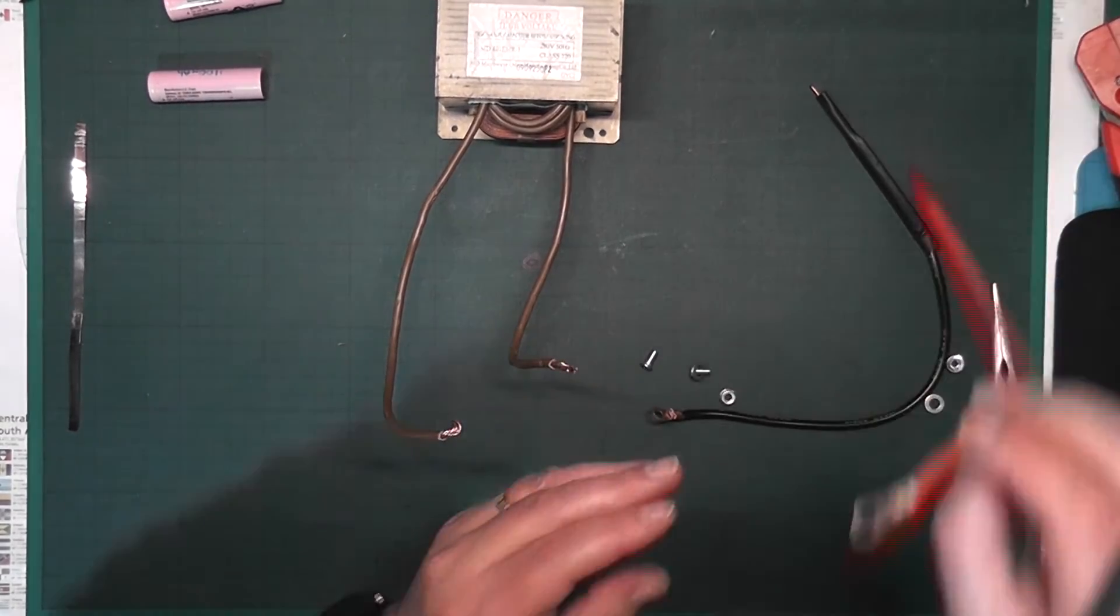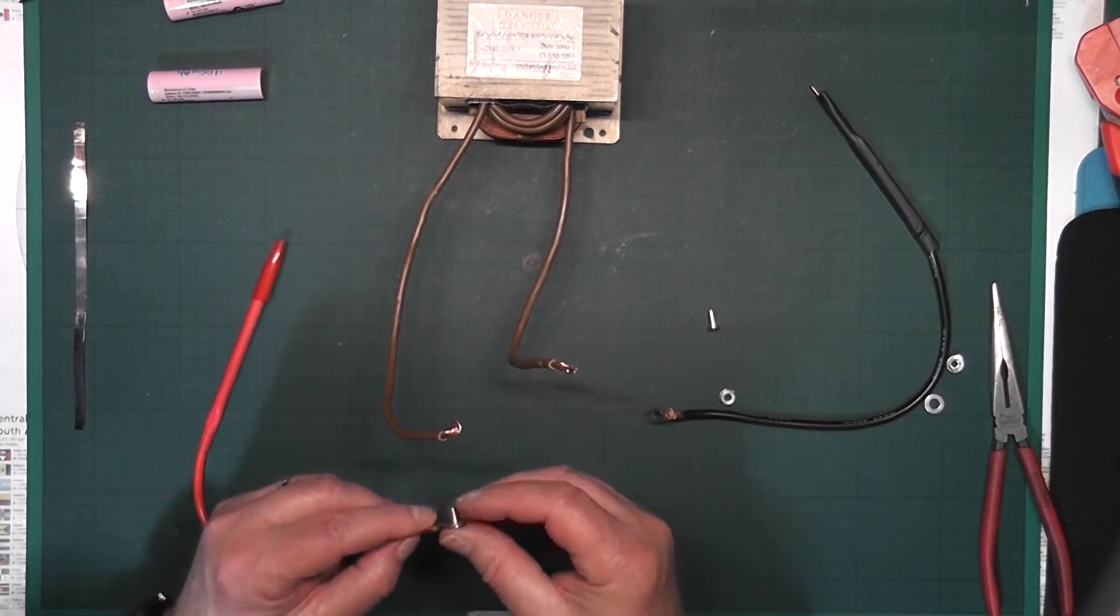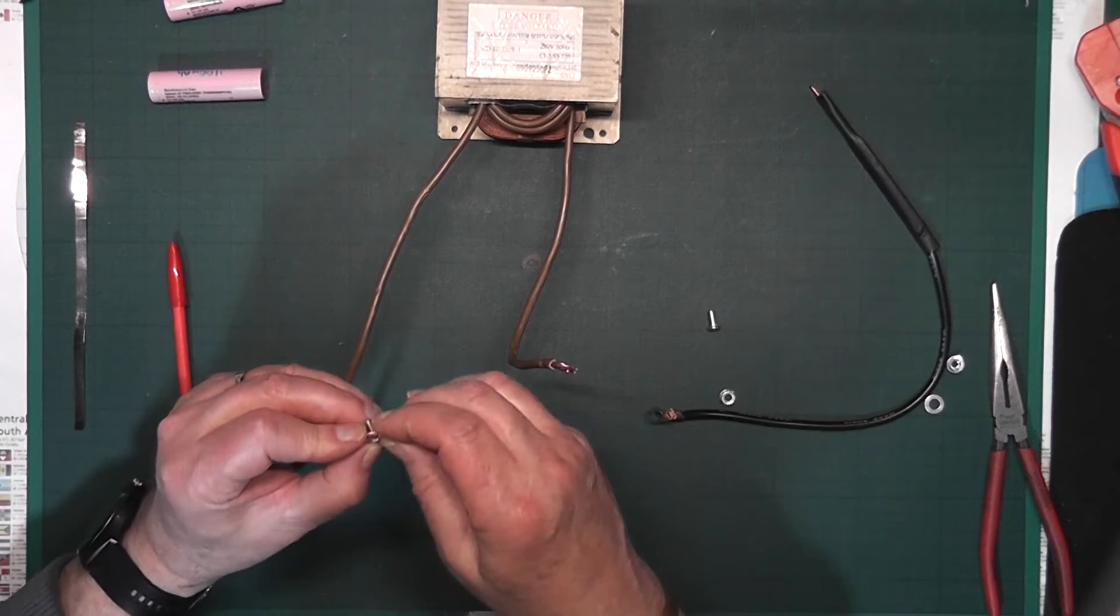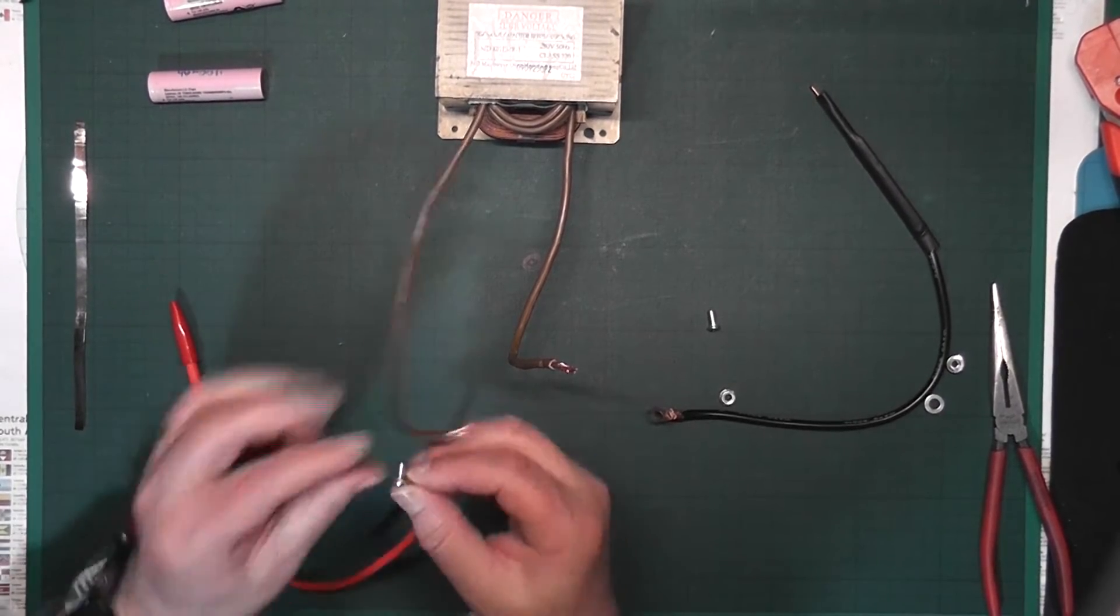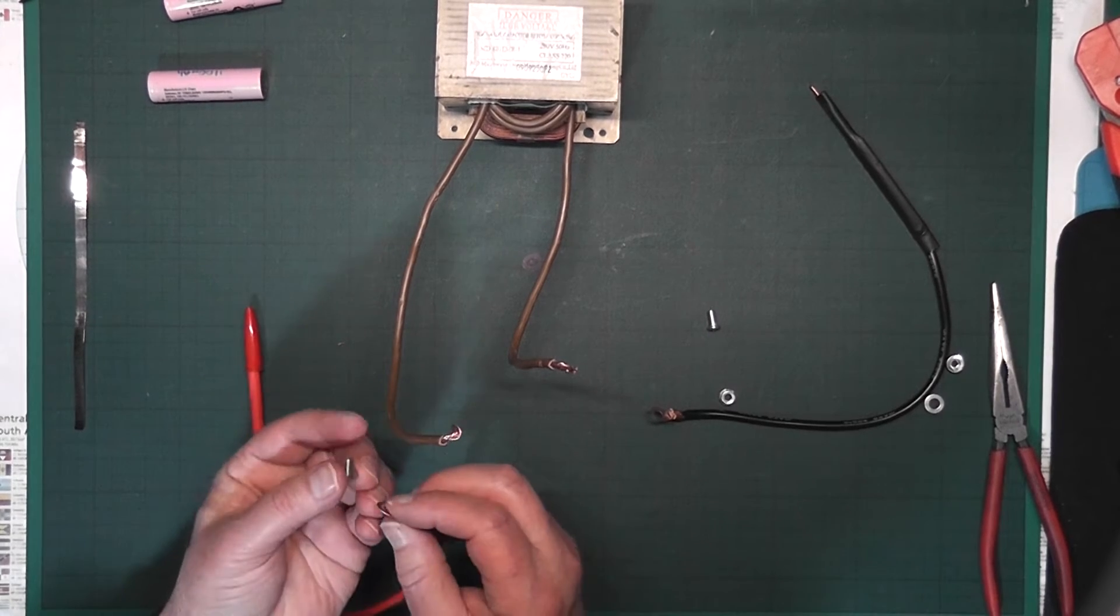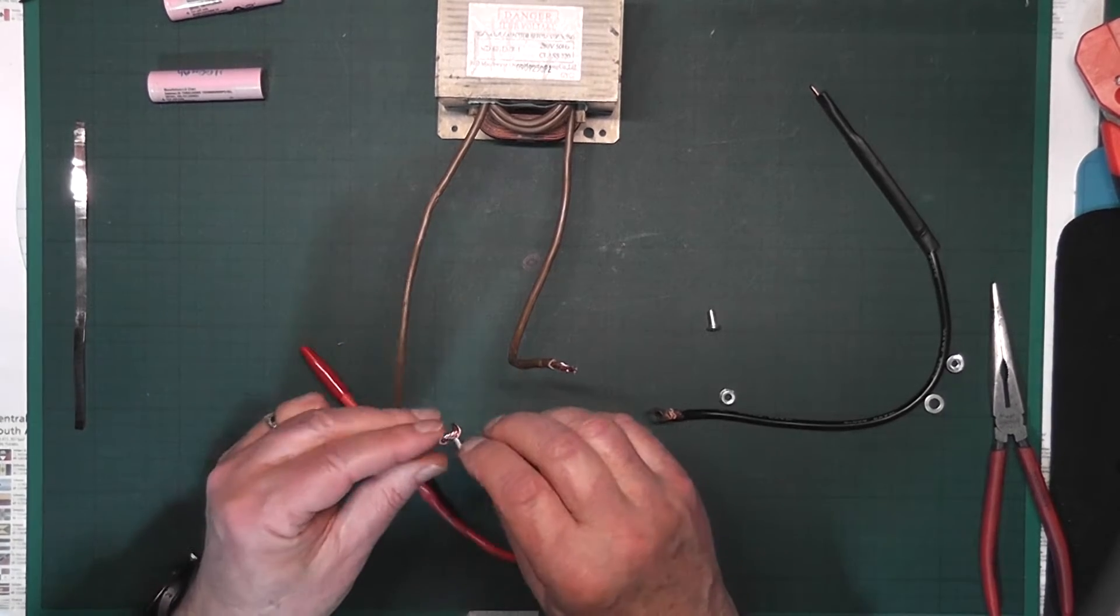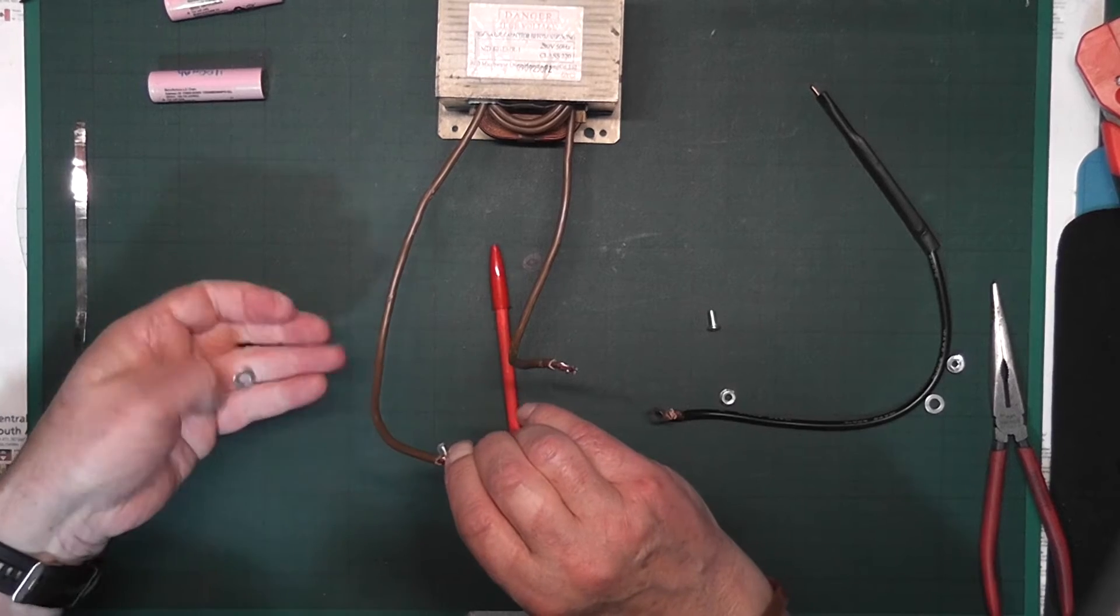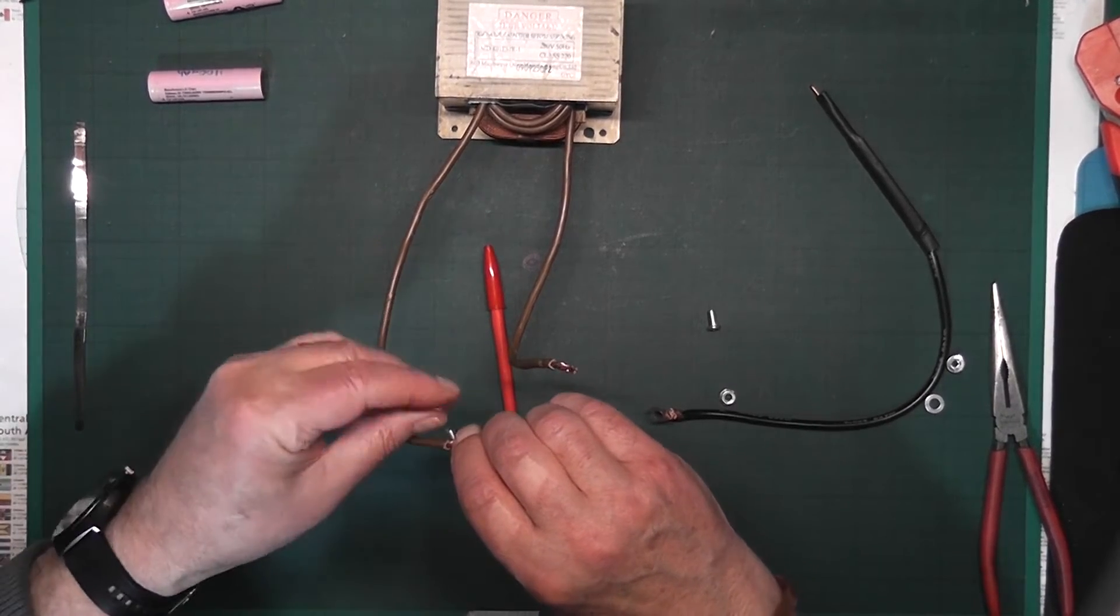With the cable stripped, or the insulation stripped from the cable, just give them a bit of a bend. And using the cables that came with one of the other kits, just push it in with a washer and we'll put the washer on the other side.